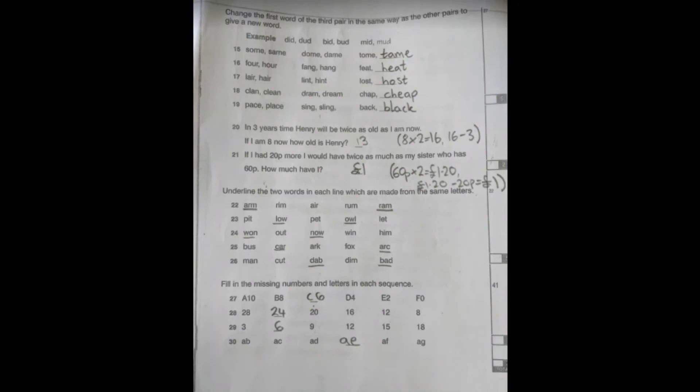Questions 27 to 30, so you're looking at the pattern and following the sequence. 27 is A10, B8, C6, then D4, E2, F0. So the letters are going up in alphabetical order and the numbers are going down in 2s. Question 28: the pattern goes 28 then 24, 20, 16, 12, 8. So the numbers are decreasing by 4 each time. So it's your 4 times table but going backwards. 29: 3 then it's 6, 9, 12, 15, 18. So it's your 3 times table this time and it's going up in sections of three.